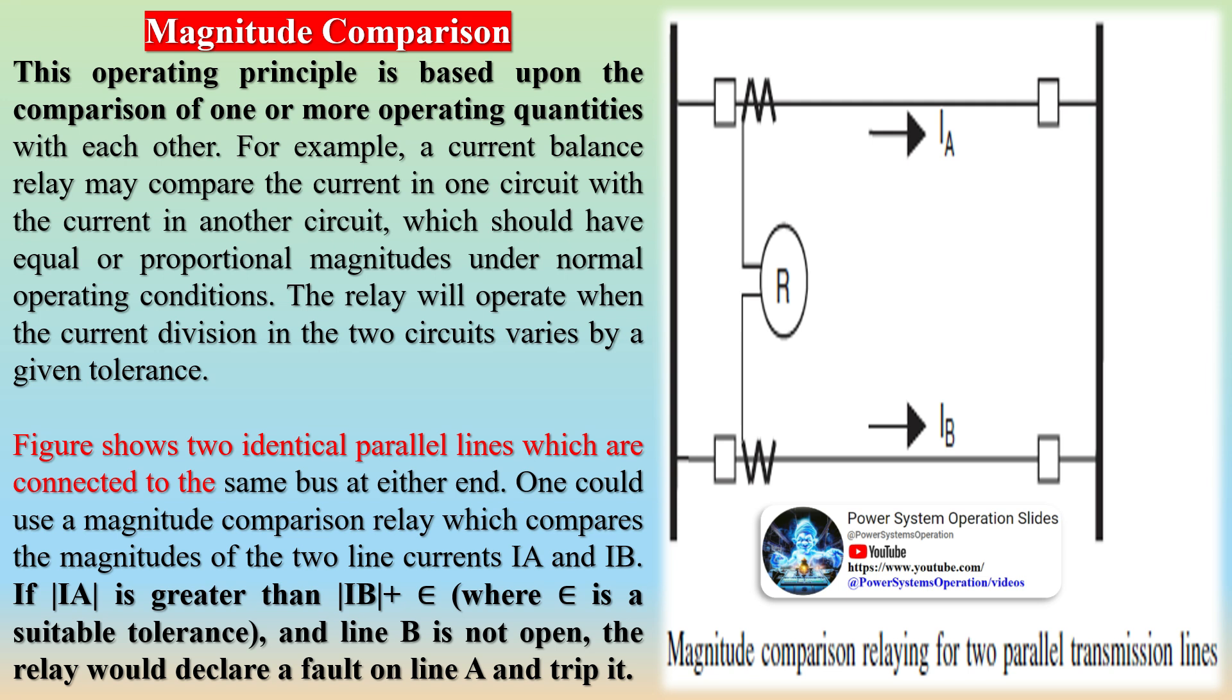The relay should be designed to operate and trip the circuit breaker for all currents above the setting, or, if desired, the relay may be connected to sound an alarm, so that an operator can intervene and trip the circuit breaker manually or take other appropriate action.